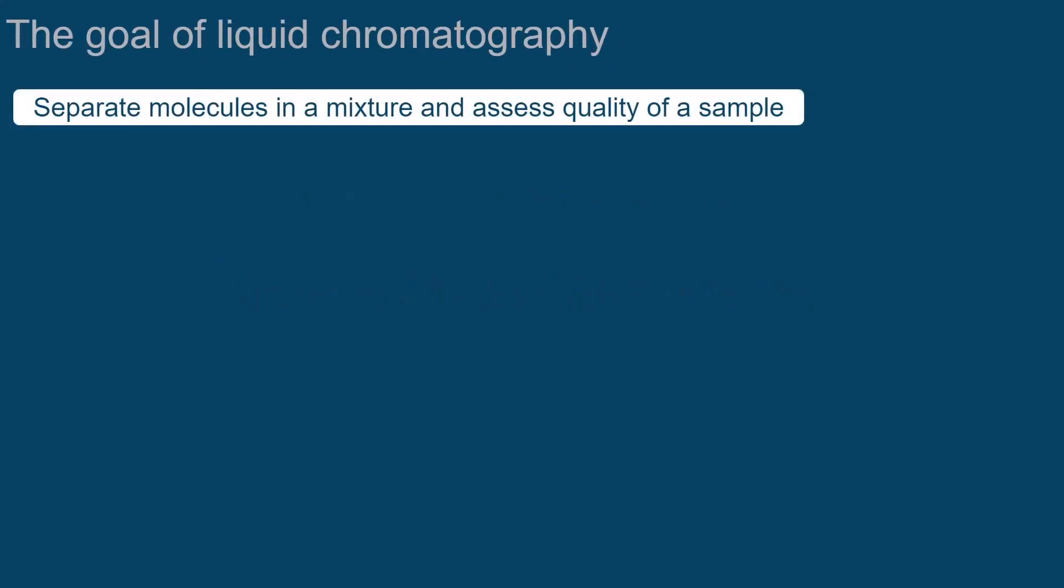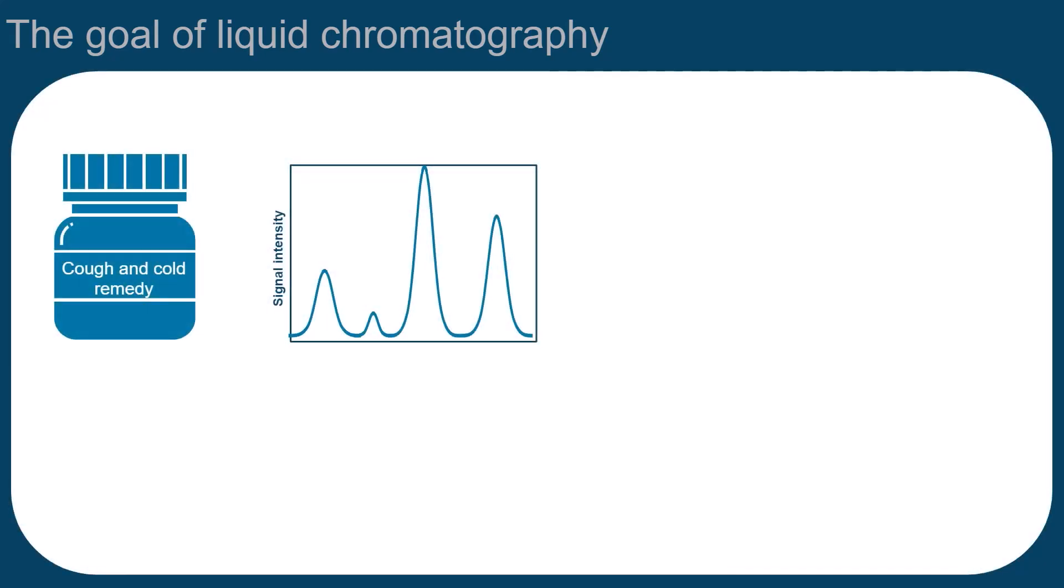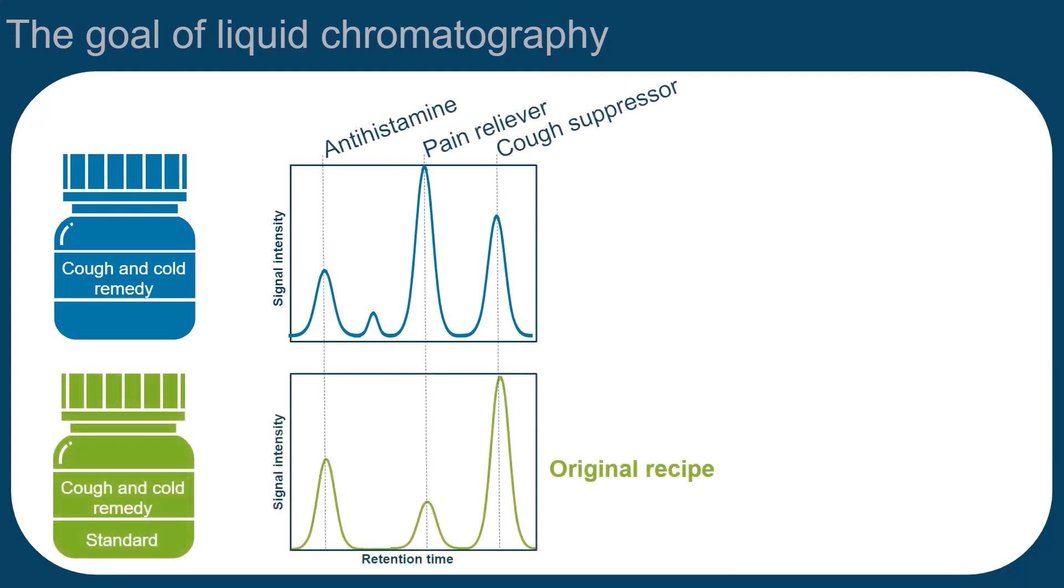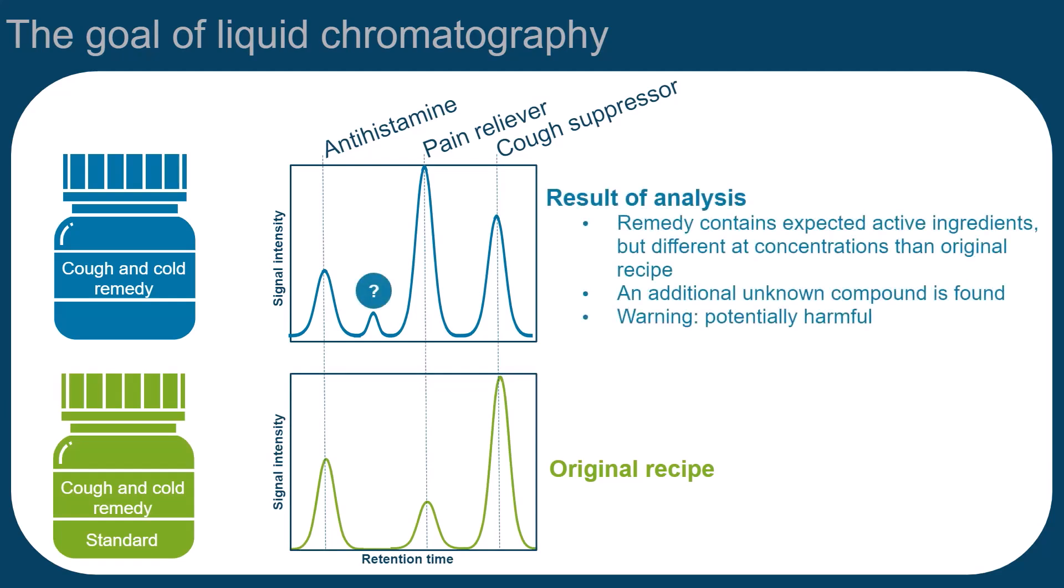The goal of liquid chromatography is to separate the molecules in a mixture of different components, so that the quality of a sample can be assessed. In this example, the ingredients of a cough and cold remedy were successfully separated in an LC system. By comparison with a standard reference drug formulation, the signals can be identified, and the signal intensities give information about their quantity. The result of this example LC analysis is that the overall quality of the sample does not match the expected composition of the product and may be potentially harmful.